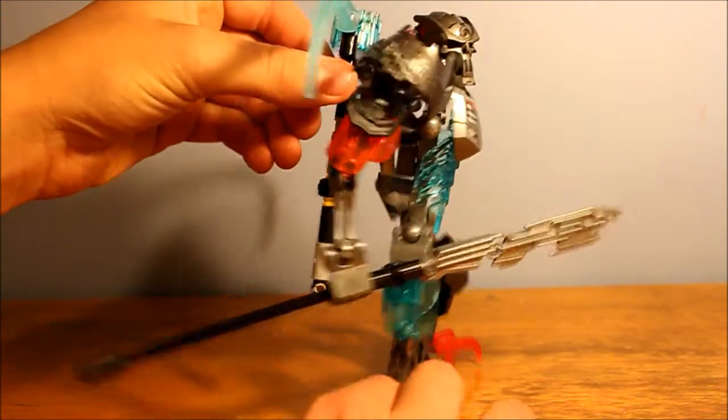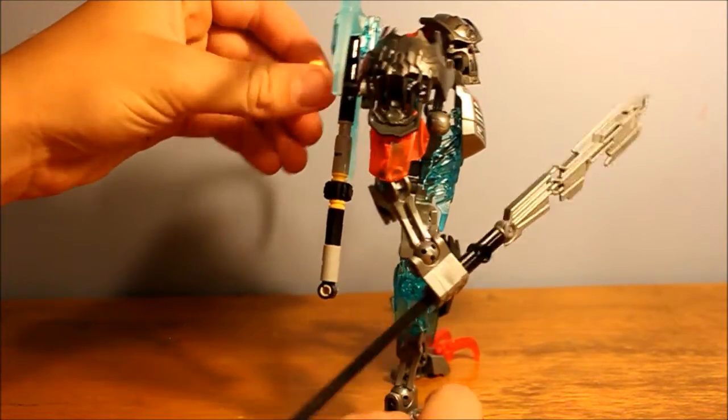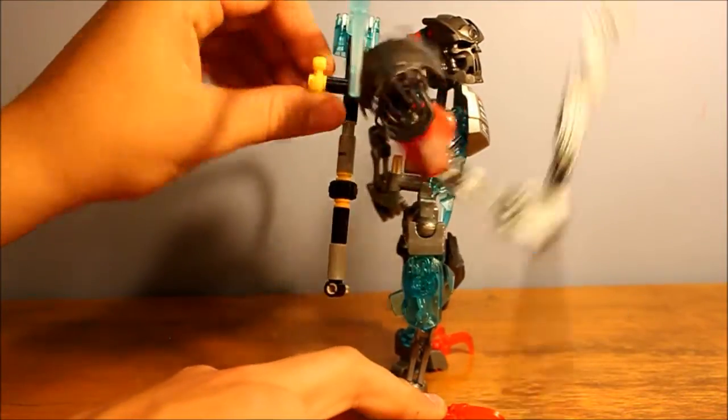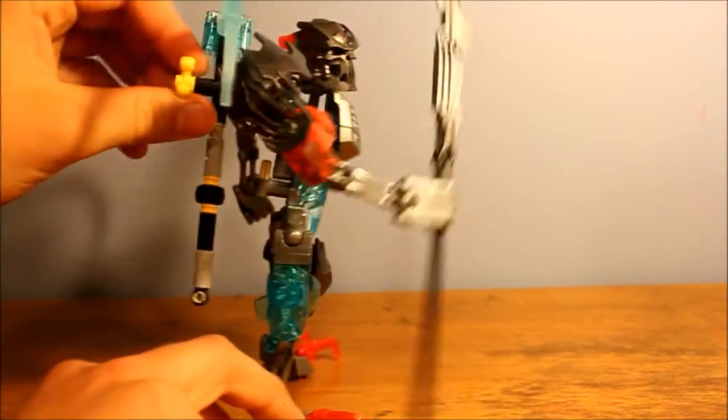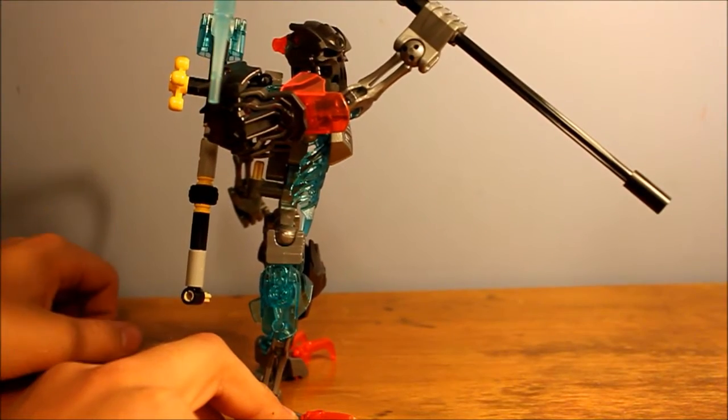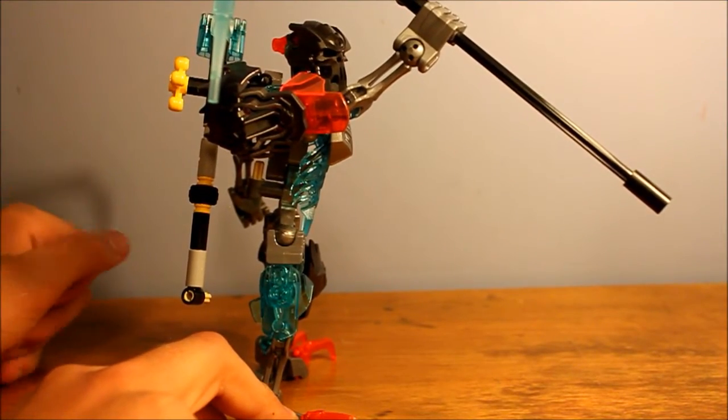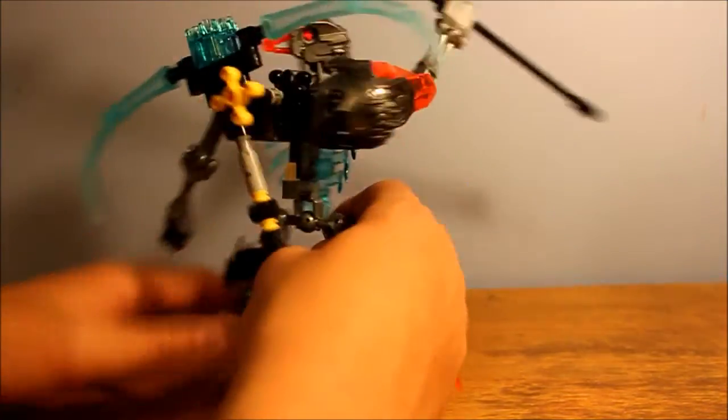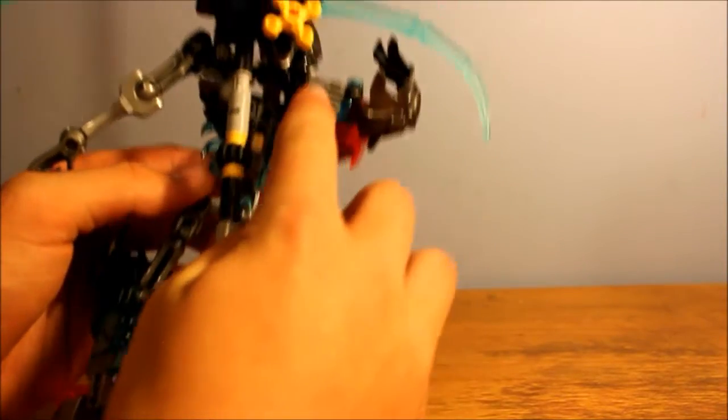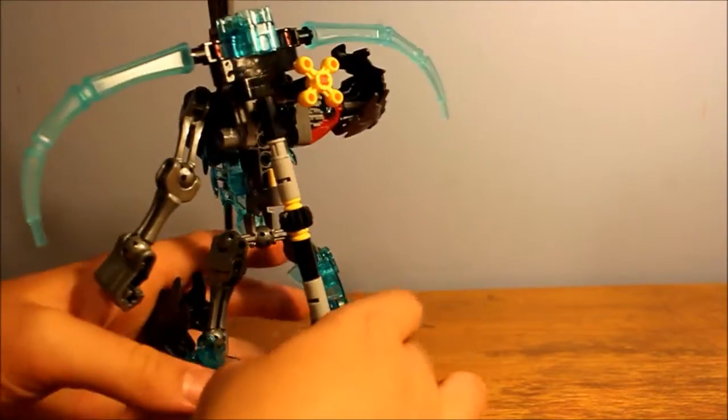Now, like all the other 2015 sets, he's got the 2015 arm swinging function. And let go of the gear and it stays put. And that's standard this year. It's all because of the fancy gearing behind this shoulder. That's normal. That's cool.